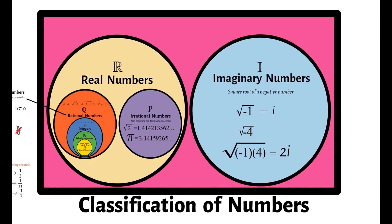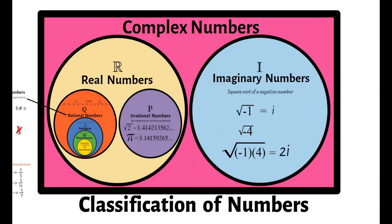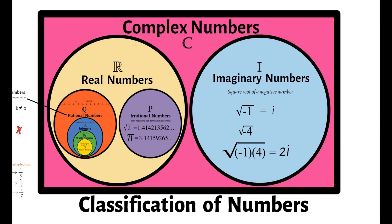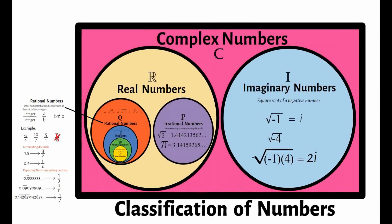Next classification of numbers are complex numbers. It is denoted as this symbol. These are simply the sets of all real and imaginary numbers. So ulitin ko: we have the complex numbers. Under complex numbers, we have real and imaginary numbers. Under real numbers, we have rational and irrational numbers. Under rational numbers, we have integers. Under integers, we have whole numbers. And under whole numbers, we have natural or counting numbers.